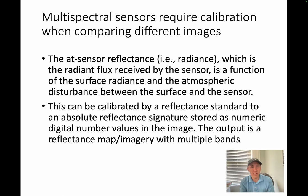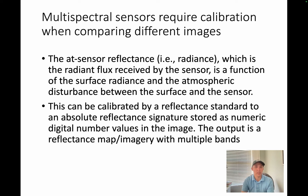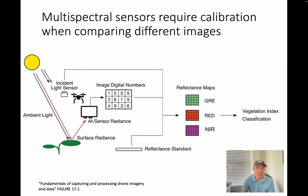Multi-spectral sensors are passive sensors, so they're just receiving whatever reflectance comes from the surfaces they're imaging. There's no active signal being sent out like there is with LIDAR. Because of that, if you take an image in the morning versus in the middle of the day versus in the evening, you'll get slightly different results — just the same way you would from a camera. So what we have to do is calibrate our multi-spectral images to get a standardized reflectance.